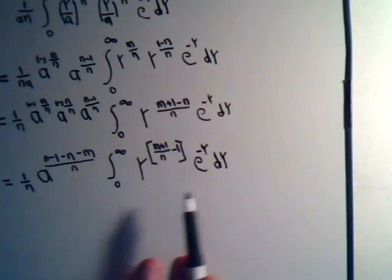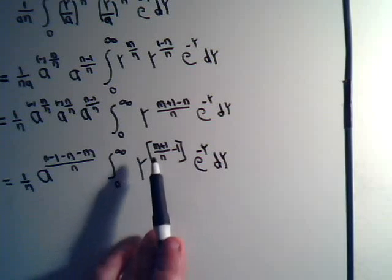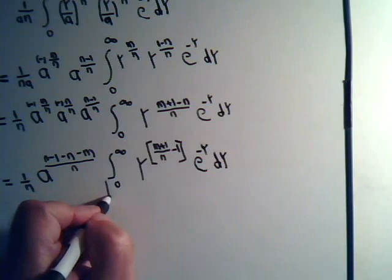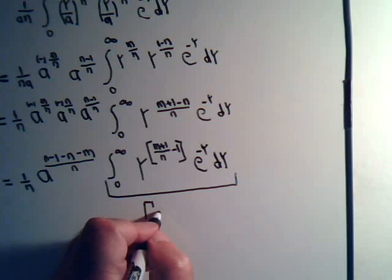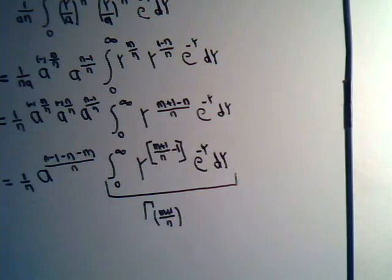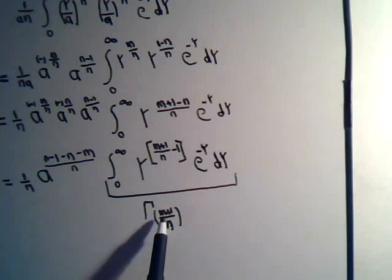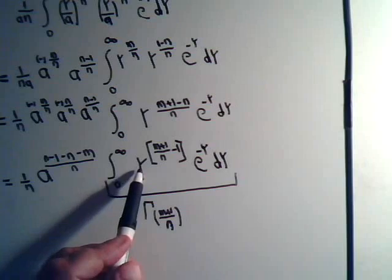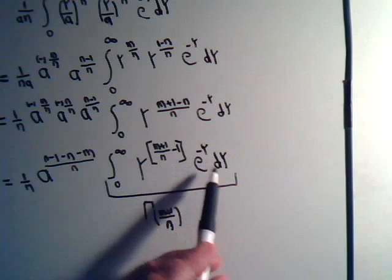We have the variable y, where we have e to the minus that variable dy — that fits the pattern — and y is raised to the power of some variable minus 1. In fact, this right here would be the gamma function of m plus 1 over n. If we said, here's the gamma function of m plus 1 over n, how would you write it as the integral? That would be the integral of a variable — we'll call it y — raised to this power minus 1, times e to the minus that variable dy.